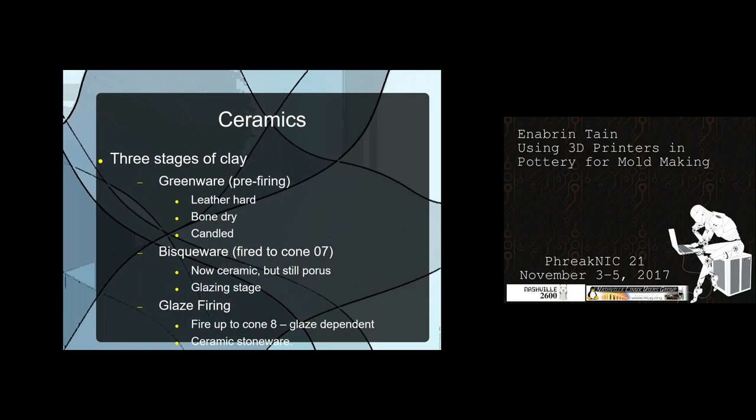So to prevent that from happening, we stick it in a regular oven and set it to warm or 200 degrees. You don't want it to go above 212 degrees Fahrenheit, but you want it hot enough to wiggle the molecules of water out of the structure of the piece. That's candling. Really fancy kilns let you program a candling stage where you raise it to 200 degrees, leave it there for three hours, then ramp up to the target temperature.